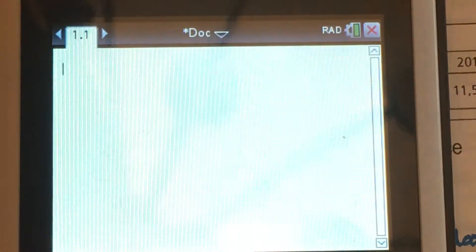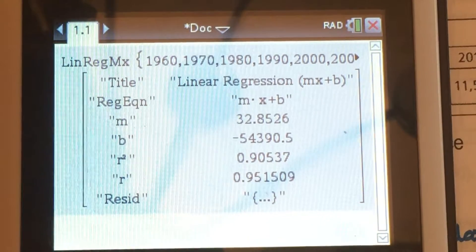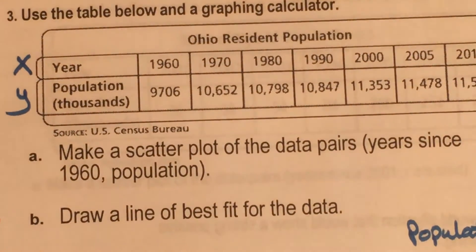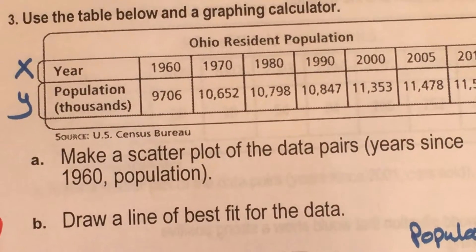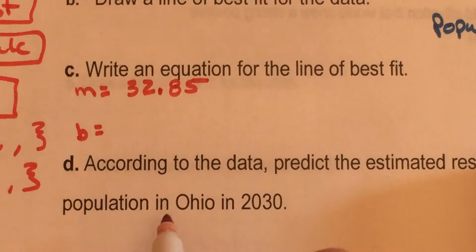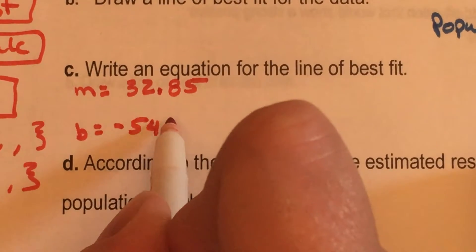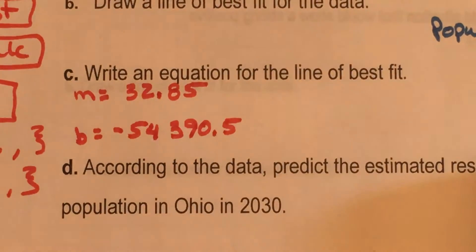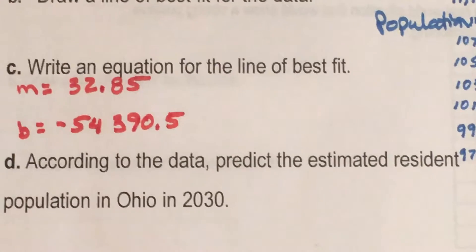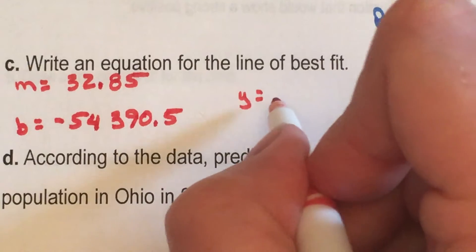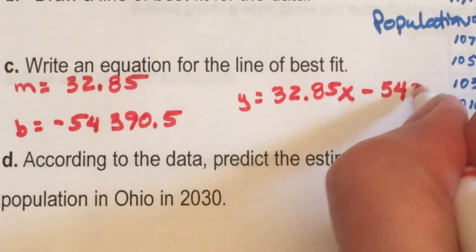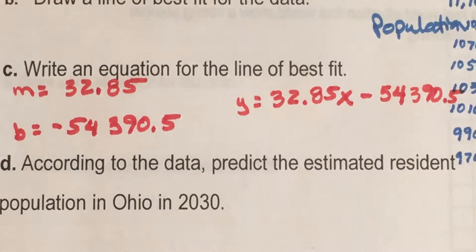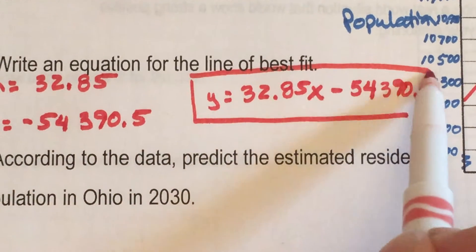All right. Instructions. Enter. Enter. Boom. There it is. So let's write that down on your paper. So M equals 32.85 when you round. And B equals, oh, I can't even see it. My bad. And B equals, very negative, negative 54390.5. So your equation, Y equals 32.85X minus 54390.5. There it is. That is your equation for the line of best fit.